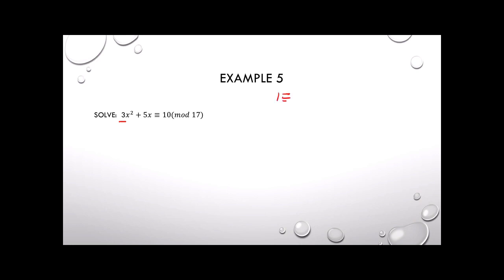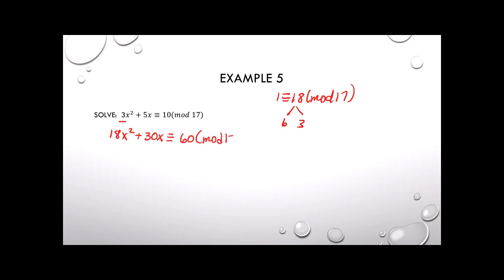Since 1 is congruent to 18 mod 17, and 18 is 6 times 3, the inverse of 3 mod 17 is 6. Multiplying through by 6 gives 18x squared plus 30x congruent to 60, mod 17. Now let's simplify those coefficients mod 17.